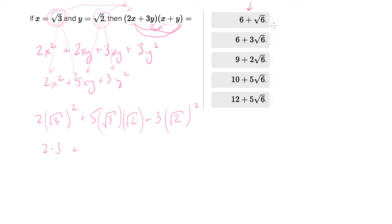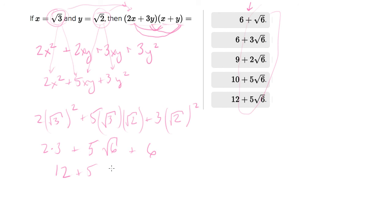Now, (√3)² is just 3, so we get 2 times 3. Then √3 times √2 is √6, which you can see in the answer choices — that's a good sign. And (√2)² is 2, so 3 times 2 is again 6. That gives us 6 plus 5√6 plus 6, which is 12 plus 5√6 — your last answer choice.